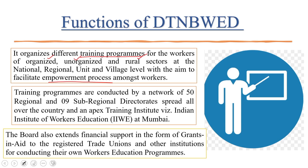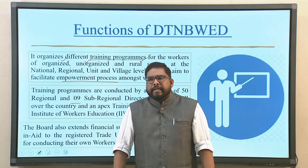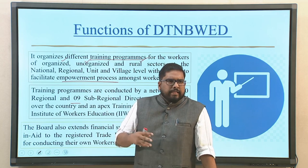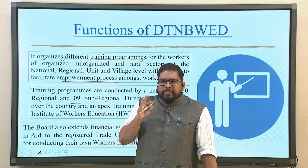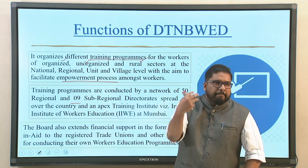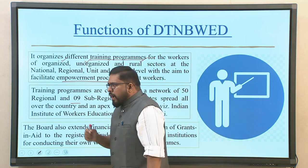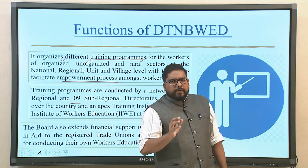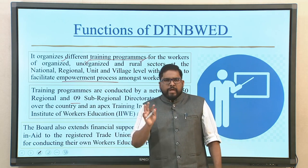Training programs are conducted through a network of 50 regional and 9 sub-regional directorates spread across the country, with an apex training institute — the Indian Institute of Workers Education (IIWE) — at Mumbai. The board also extends financial support in the form of grants-in-aid to registered trade unions and other institutions to conduct their own workers' education programs. This is an attempt to empower workers — not undermine trade unions — across organized, unorganized, and rural workplaces.